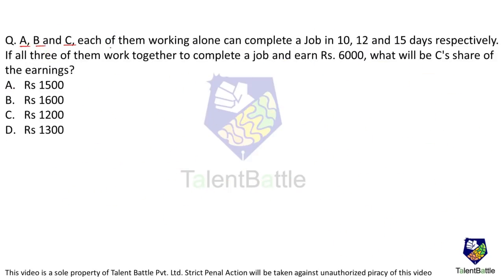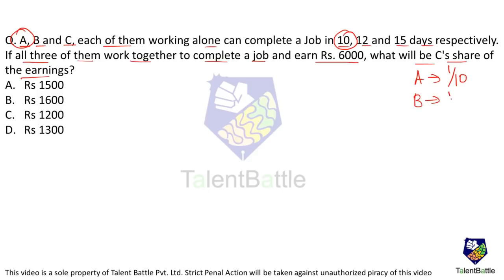A, B, and C each working alone can complete a job in 10, 12, and 15 days respectively. If all three work together and earn Rs. 6000, what will be C's share of the earnings? A can complete the work in 10 days, so in one day A does 1/10 of the work. B does 1/12 per day and C does 1/15 per day.